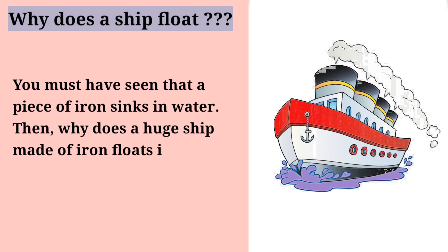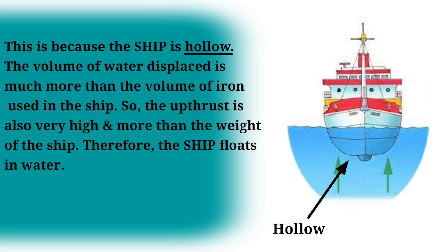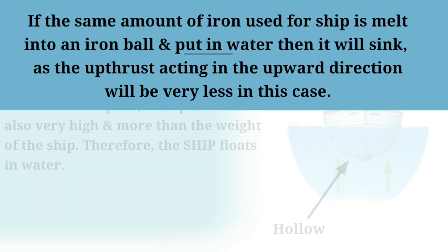Why does a ship float? You must have seen that a piece of iron sinks in water. Then why does a huge ship made of iron float in water? This is because the ship is hollow. The volume of water displaced is much more than the volume of iron used in the ship, so the upthrust is also very high and more than the weight of the ship. Therefore, the ship floats in water.